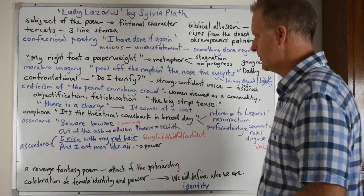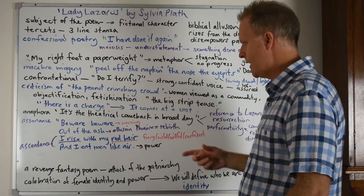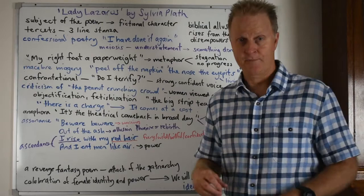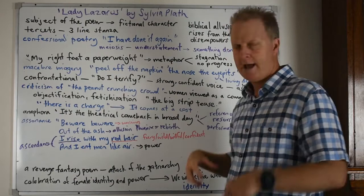At the end of the poem, we have, through assonance, beware, beware, out of the ash I rise with my red hair, and I eat men like air. So that hair sound is very strong and very prominent. And it focuses our attention onto a few things.